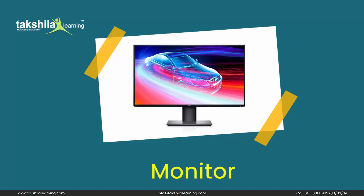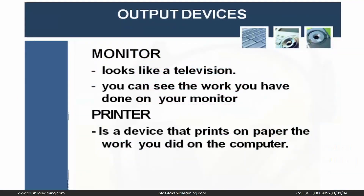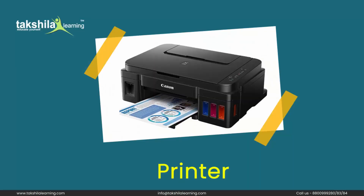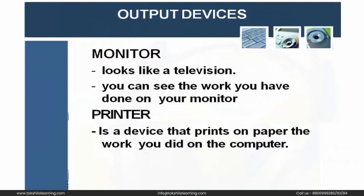Monitor looks like a television screen. You can see the work you have done on your monitor — whatever you have entered into your computer, you can see it on the monitor as output or as a result. Printer is a device that prints on paper the work you did on the computer. Whatever work you have done on the computer is printed by the printer on the paper.